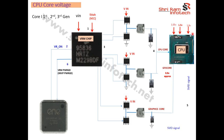The CPU requires a total of 5 voltages: 1.05V, 1.5V, and 1.8V, plus the CPU core voltage and the graphics core voltage. The CPU core voltage is approximately 1 volt at 30 amperes, and the graphics core voltage is approximately 0.9V or 0.8V at 10 to 15 amperes. Because the CPU requires a huge 30 ampere current, it needs two pulse width modulators.